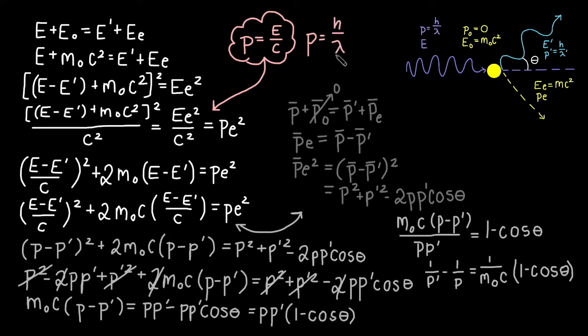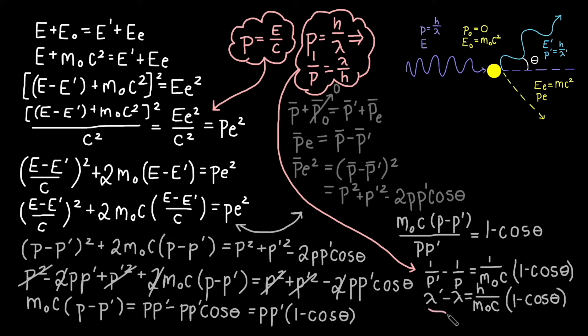Momentum is equal to Planck's constant over wavelength. We substitute the inverse of this into our equation to rewrite momenta in terms of wavelengths. Lambda prime minus lambda is just the change in wavelength. H over the electron's mass times c is what we call the Compton wavelength, which is equal to about 2.43 picometers.